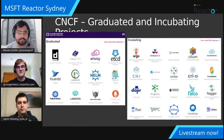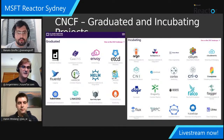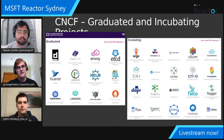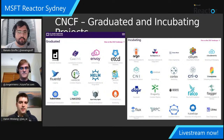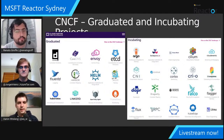CNCF projects have graduated, incubating, and sandbox categories. Graduated are the main production-ready projects. On the graduated list, Kubernetes is the main one, then Prometheus, and Helm — which is a main project for Microsoft that originally came from Deis Labs. We acquired Deis Labs and a lot of the maintainers came and helped continue to build Helm at Microsoft, but it's very much now a community-driven thing. That's the wonderful thing about CNCF — it's not a vendor thing.